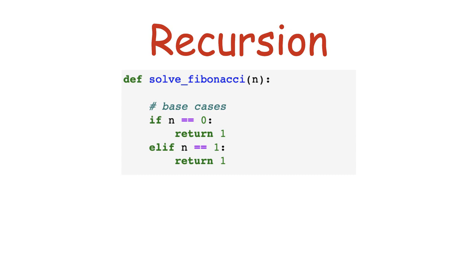And take care of the base cases, the instances of the problem when we won't have to divide it into subproblems. In this case, it's when we want the first or the second element, with indexes 0 or 1 respectively. If this is the case, we simply return the known value.